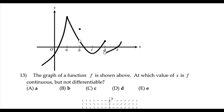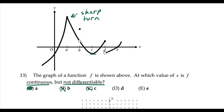Question 13: we're looking for where f is continuous but not differentiable. Point a jumps out because of the sharp turn — f is not differentiable at x equals a, but it is connected so it is continuous. Point b: we're not continuous there, so automatically not differentiable. Point c: both continuous and differentiable. Point d: not continuous due to the jump, so not differentiable either. Point e: both continuous and differentiable. Definitely a.